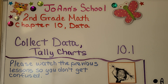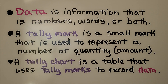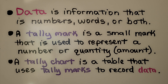We're now in Chapter 10, which is all about data. This is 10.1: Collect Data, Tally Charts. Data is information that is numbers, words, or both. A tally mark is a small mark used to represent a number or quantity — that's an amount. A tally chart is a table that uses tally marks to record data.